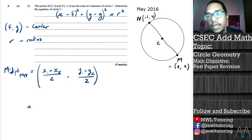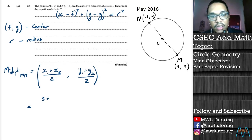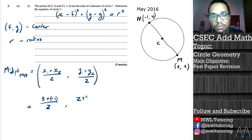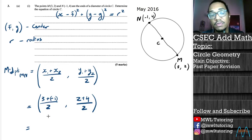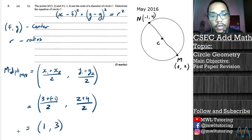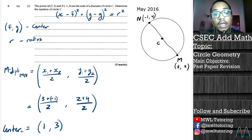For this question, starting with M first: (3 + (-1)) / 2 for the x-coordinates, and (2 + 4) / 2 for the y-coordinates. The negative sign wins out, so 3 minus 1 is 2, and 2 divided by 2 is 1. Then 2 plus 4 is 6, and 6 divided by 2 is 3. So the midpoint — or the center of the circle — is (1, 3).